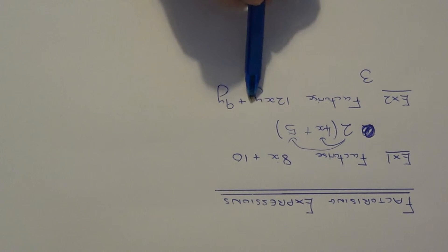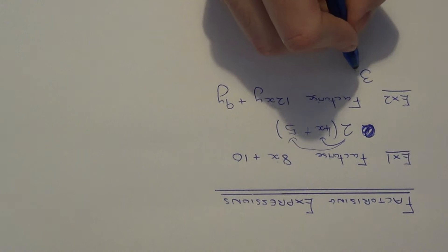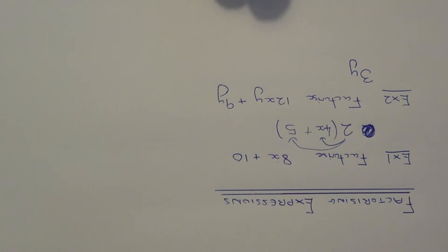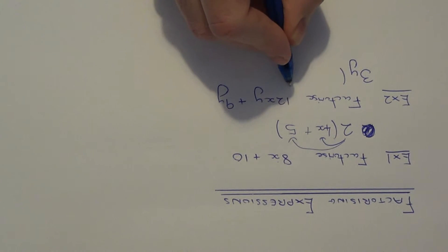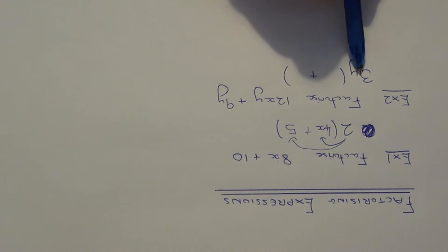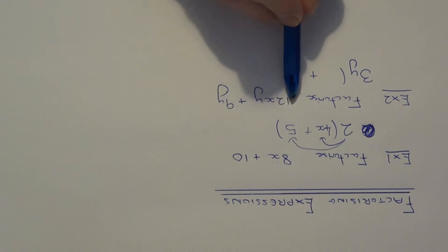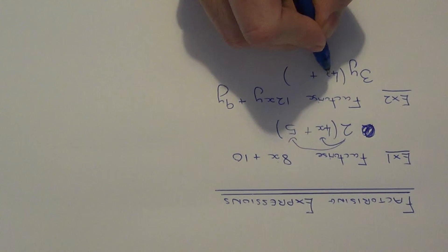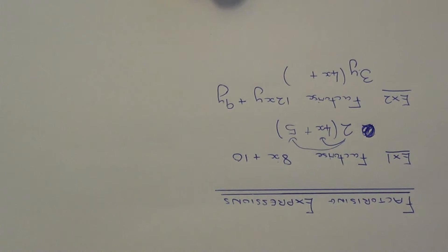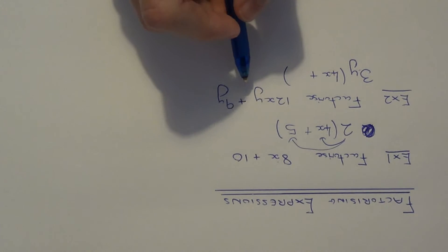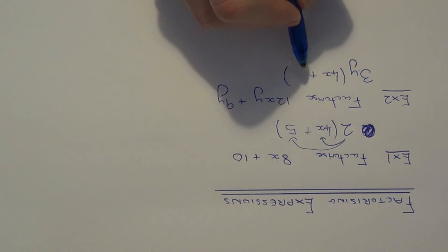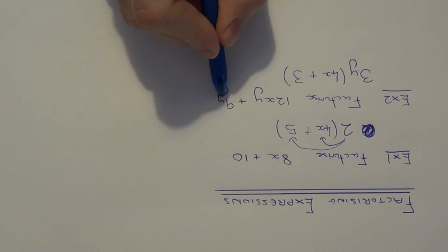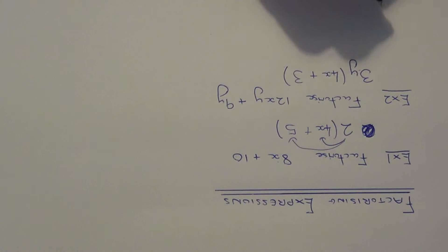Next, look for letters which are the same in both terms. Well we have a y here and a y here, so that can go next to the 3. There are no more letters the same in both terms, so we just need to figure out what goes inside the bracket. 3y multiplied by something must give 12xy — this will be 4x, because 3y times 4x is 12xy. And 3y times something must give us 9y — that will be 3, because 3y times 3 is 9y. So there's our factorised expression.